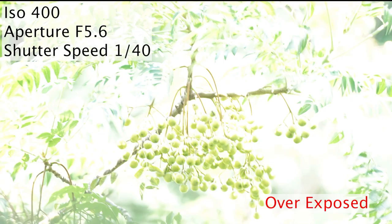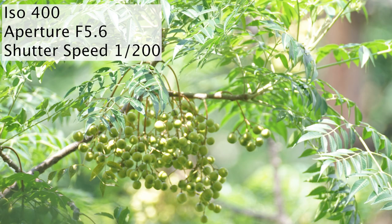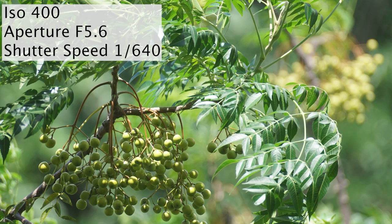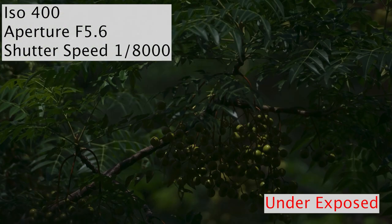For a fixed ISO and aperture, different shutter speeds will give you different types of photographs, which can vary from being overexposed to underexposed.